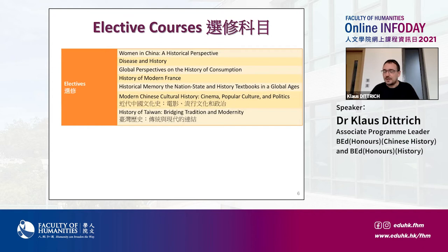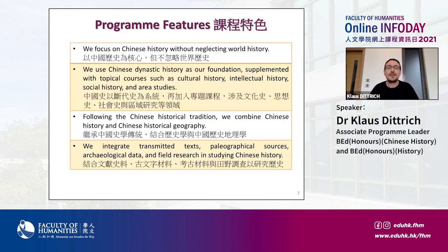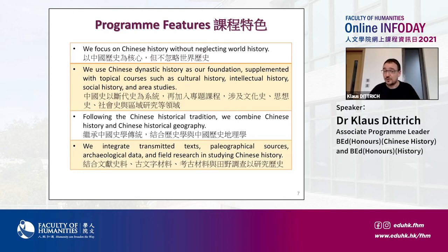In addition to the major core courses, students have the possibility to take many electives to broaden their historical horizon — largely the same electives as for the history program. Program features include a focus on Chinese history without neglecting world history, placing China in a global perspective, using Chinese dynastic history as a foundation, supplemented with topical courses such as cultural history, intellectual history, social history, and area studies.